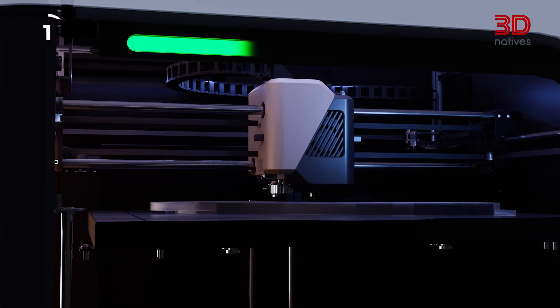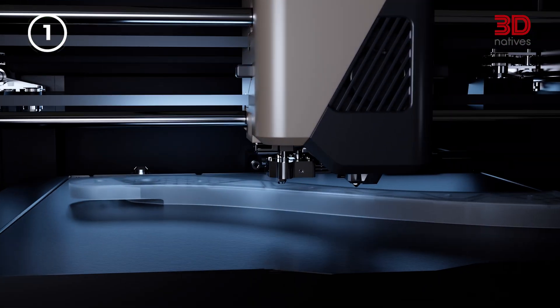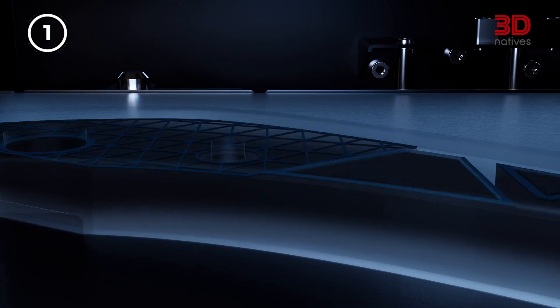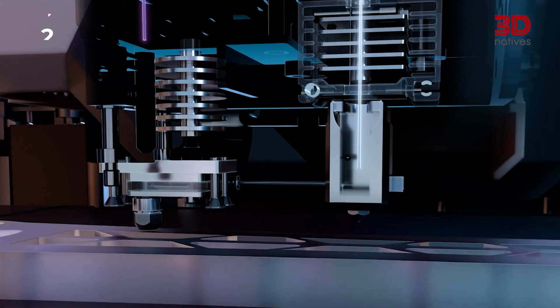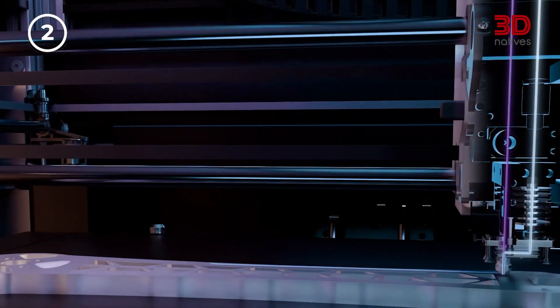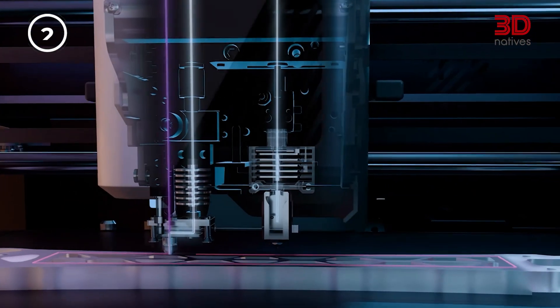Continuous fiber co-extrusion, reinforcing plastic parts with real carbon fiber for near aerospace-grade strengths. Dual nozzle system, one for plastic, one for fiber, allowing hybrid printing for precision composites.